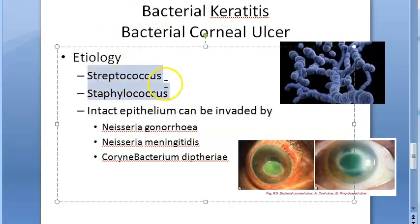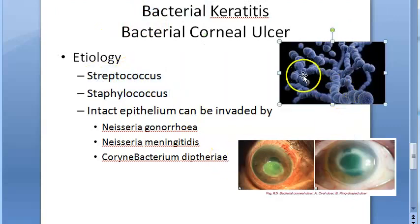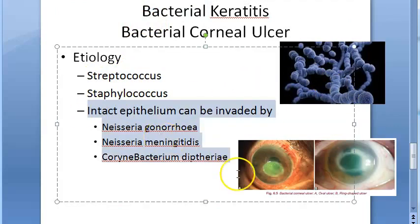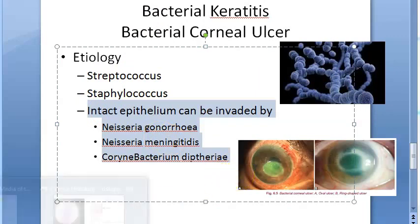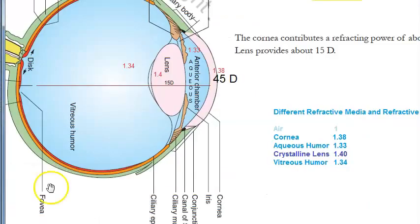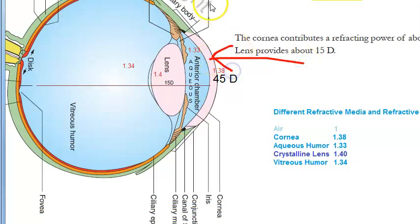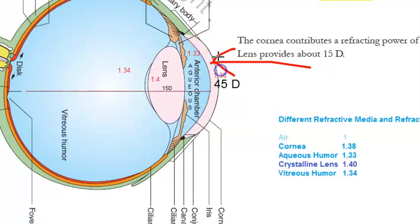The organisms can be Streptococcus, Staphylococcus, and many others. In fact, if the epithelium is totally intact, there are some organisms which are so virulent that they can invade a completely healthy, intact epithelium.